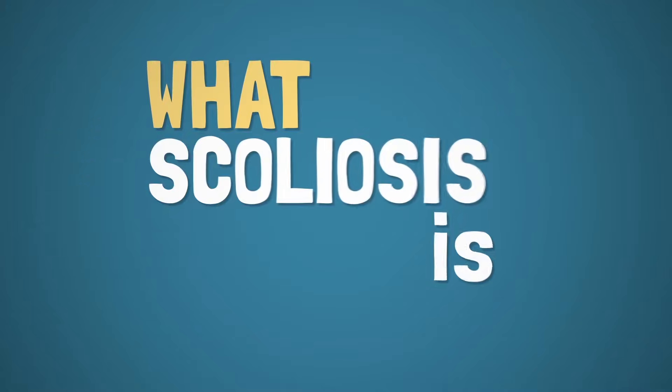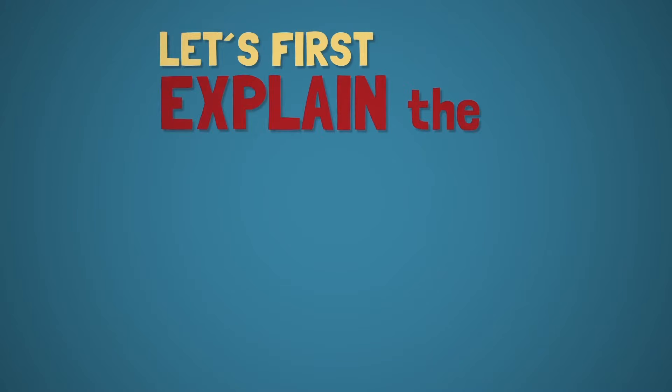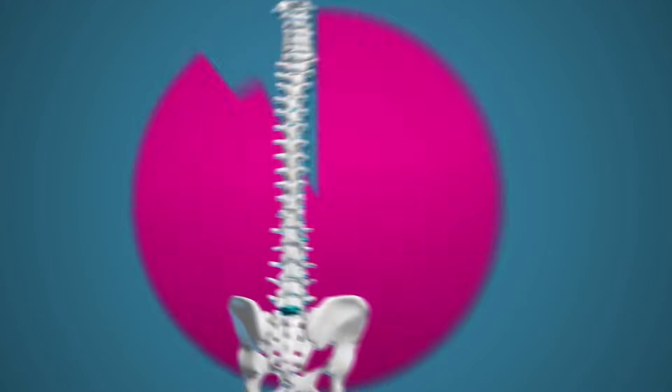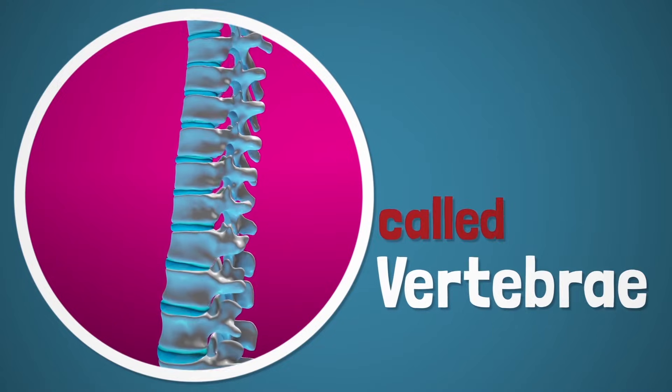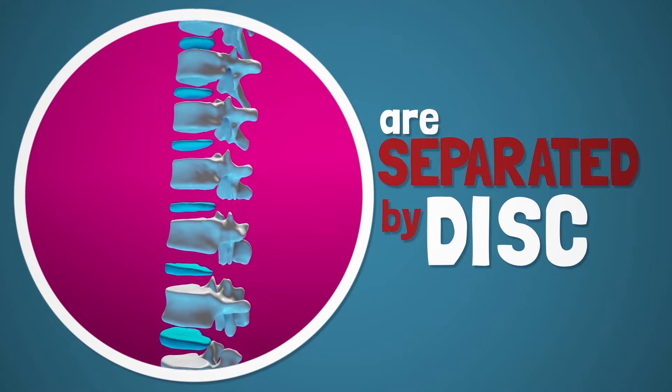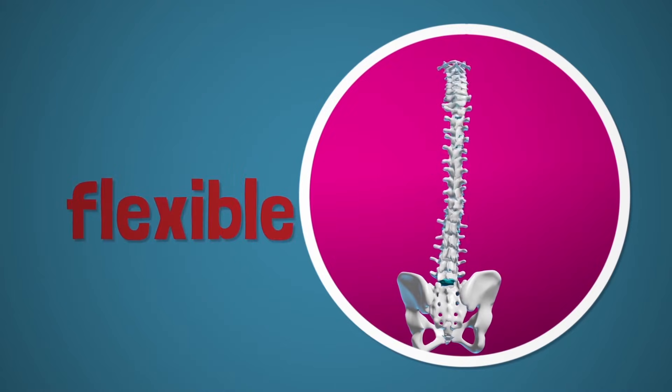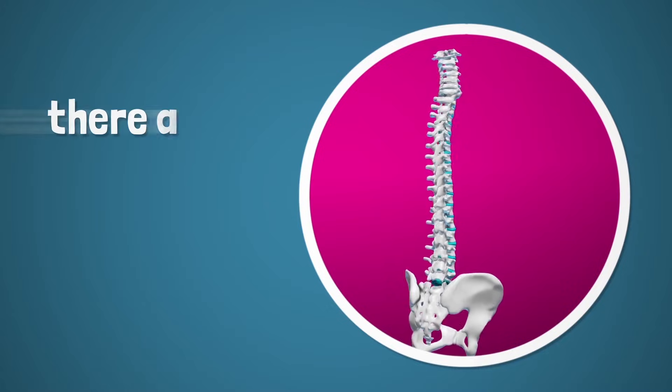Before we explain what scoliosis is, let us first explain the spine. The spine is typically made up of 24 individual bones called vertebrae that are separated by discs. The discs allow the spine to be flexible.